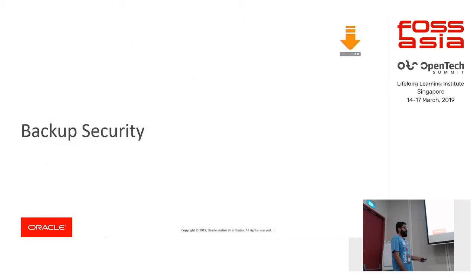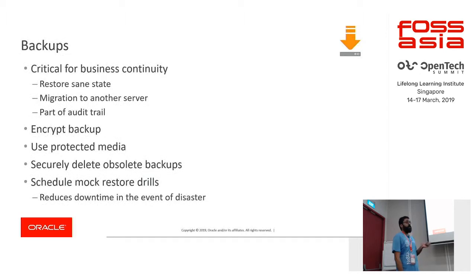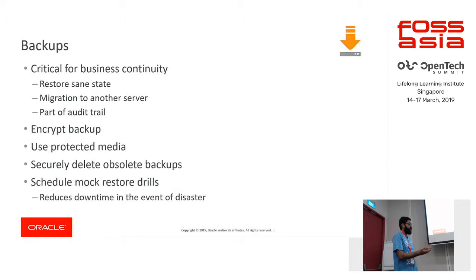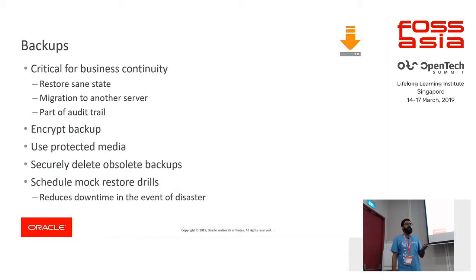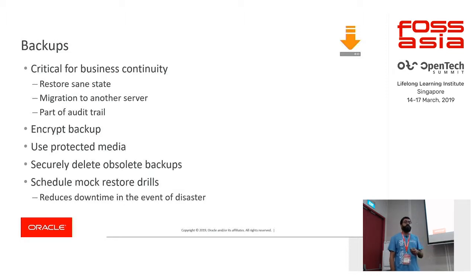Last part: backup security. Backups are critical for business continuity — they allow a service to return to a sane state after, say, a denial of service, a migration to another server, or as part of an audit trail. Always encrypt your backups and put them on protected write-once, read-many media. Always delete obsolete backups — if you don't need it, there is no reason to keep it. But use a secure delete function; don't just do an rm -rf, which simply removes the inode.